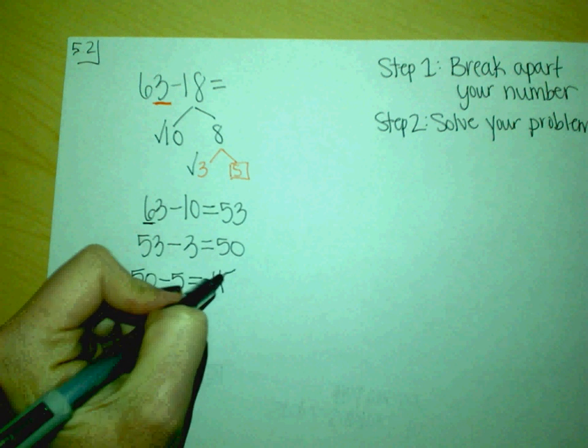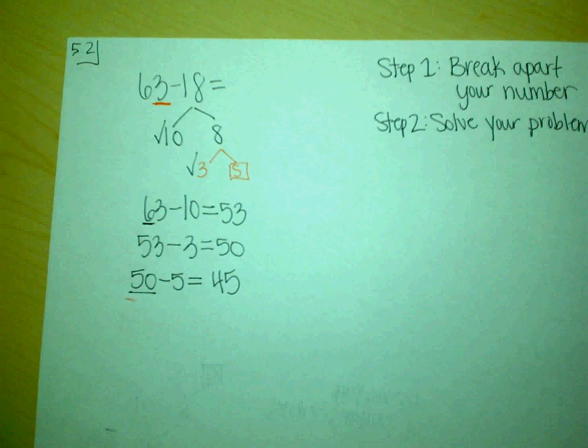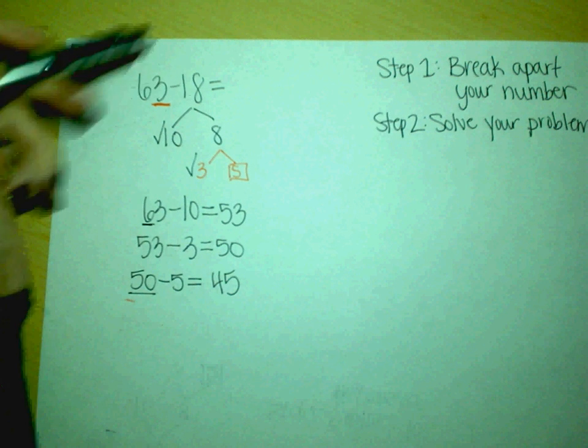Whatever strategy works for them to get them to the answer. So now we know that 63 minus 18 is 45.